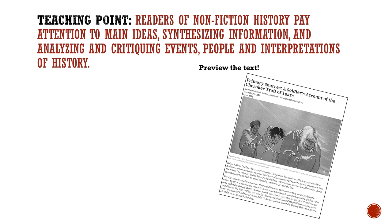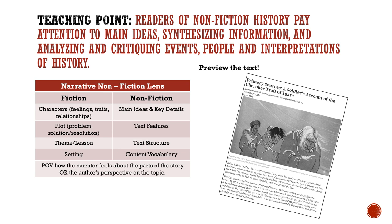Before we get started, you'll see I have a text. I took a moment to preview this. The title says: 'Primary Sources: A Soldier's Account of the Cherokee Trail of Tears.' A primary source is something that actually happened — it's either a document, an artifact, or a picture from the time period. In this case, it's somebody's letter that they've written — their version of what happened. This is a primary source document.